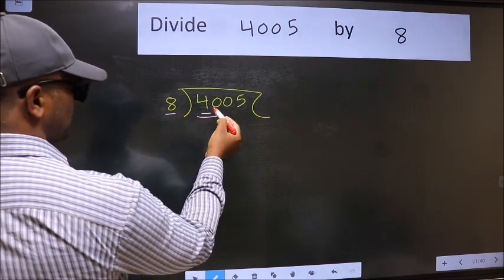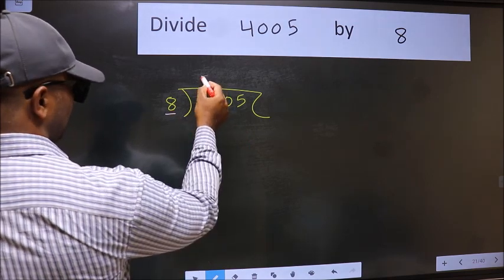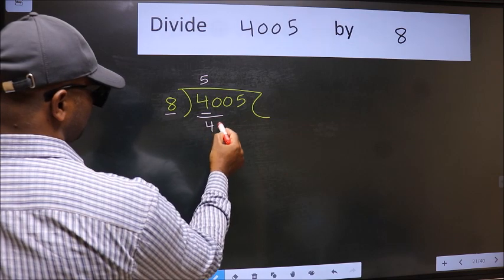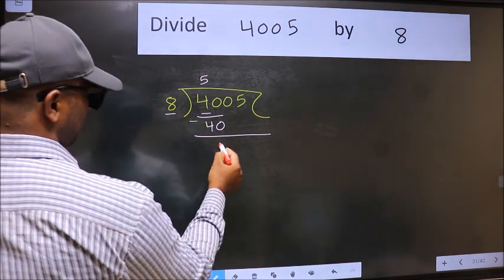So we should take two numbers, 40. When do we get 40 in 8 table? 8 fives 40. Now we should subtract. We get 0.